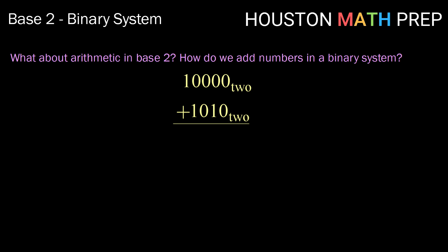Our next topic is arithmetic in base 2. How do we add numbers in a binary system? We do this the same way we add in base 10, except we carry groups of 2 instead of groups of 10. Starting on the right, 0 plus 0 is 0, 0 plus 1 is 1, 0 plus 0 is 0, 0 plus 1 is 1, and 1 plus nothing is 1. In this example, we get our answer without any carrying.